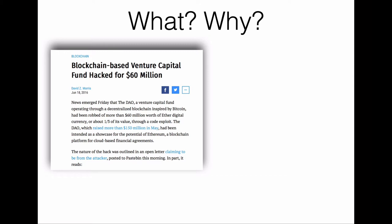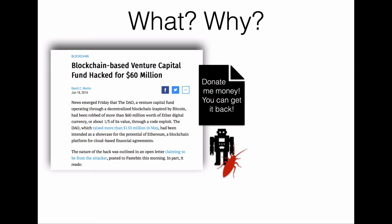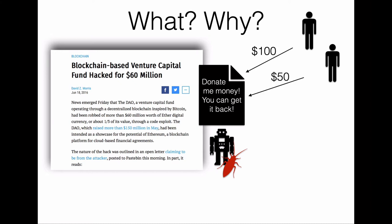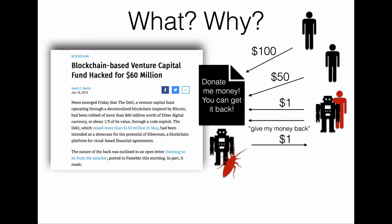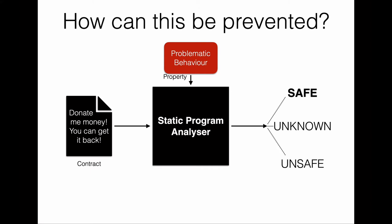One very famous example is the so-called DAO bug, where 60 million dollars were stolen by an attacker. The DAO was actually a crowdfunding contract with a buggy functionality to retrieve back donated money. Users could donate money to this contract, but an attacker created a malicious contract and could steal money from honest users by donating money and then retrieving it back again and again. The question is: how can this be prevented?